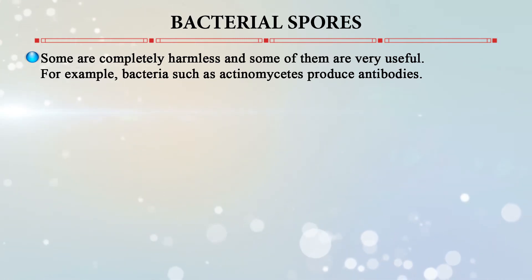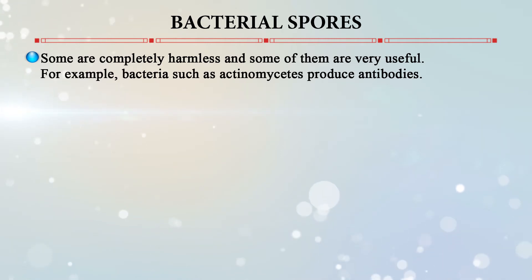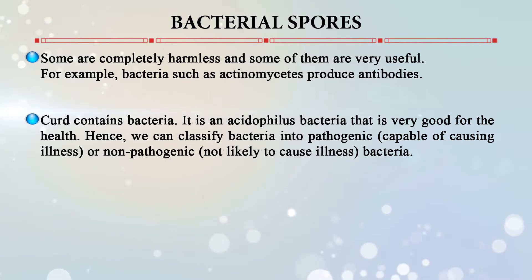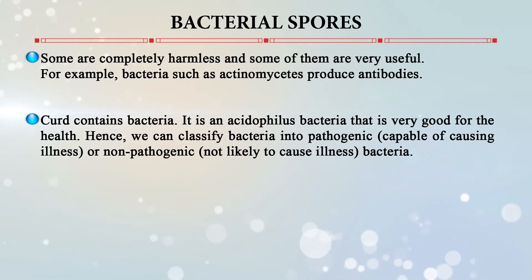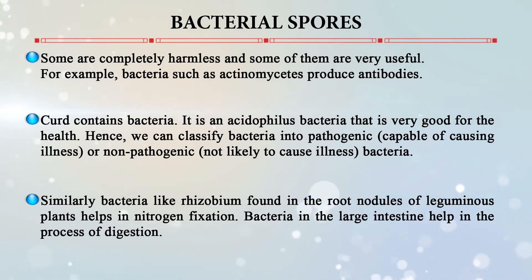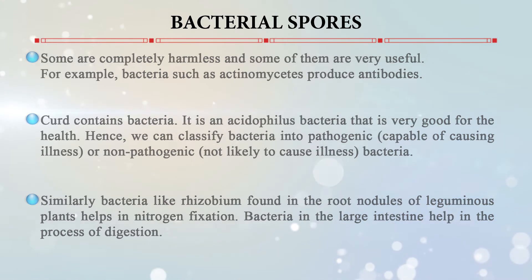Some bacteria are completely harmless and some are useful. For example, Actinomycetes produce antibiotics such as streptomycin, produced from Streptomyces, and penicillin is produced from bacterial and fungal species. Good bacteria like Lactobacillus acidophilus found in curd and probiotics are good for the gut and gastrointestinal tract. Bacteria can be classified as pathogenic — capable of causing illness — and non-pathogenic. In root nodules of leguminous plants, Rhizobium helps in nitrogen fixation from the atmosphere. Bacteria in the large intestine can also help in digestion.